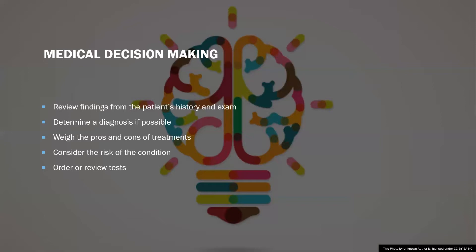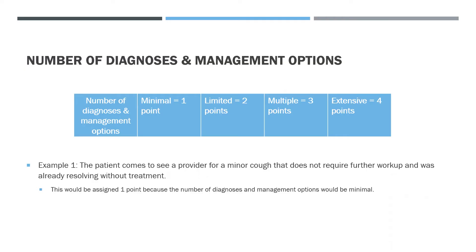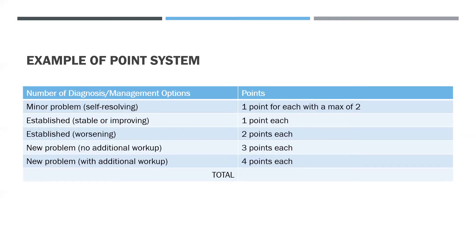MDM is based on the number and types of problems addressed during the encounter, the complexity of establishing a diagnosis, and the management decisions made by the provider. For the number of diagnoses and management options, there are four levels of complexity: minimal, limited, multiple, and extensive. For example, a patient who comes in for a minor cough that does not require further workup and was already resolving without treatment would be assigned one point — minimal.